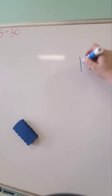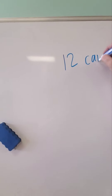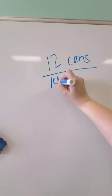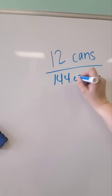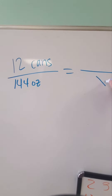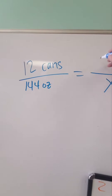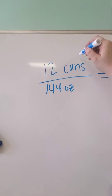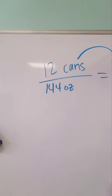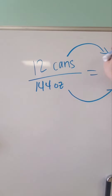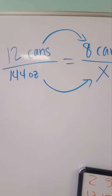Here's one that we did. It was 12 cans of soda, which was 144 ounces. And it wanted to know how many ounces eight cans of soda were. If you can tell what happened from here to here, then you can do the same thing from here to here. But I don't know what to do to 12 to make it into an eight.